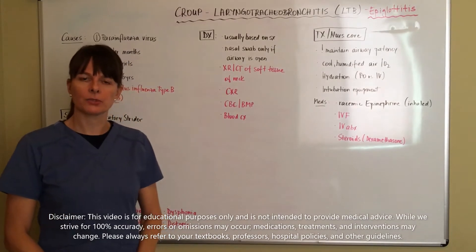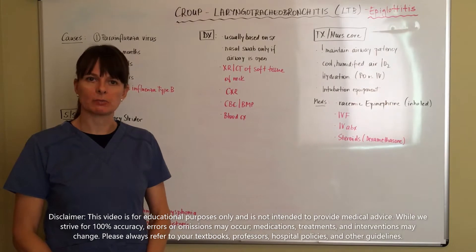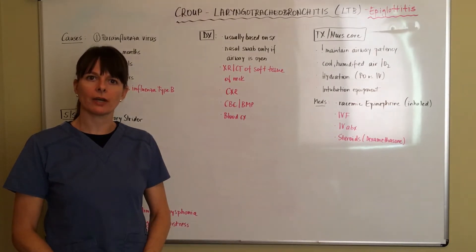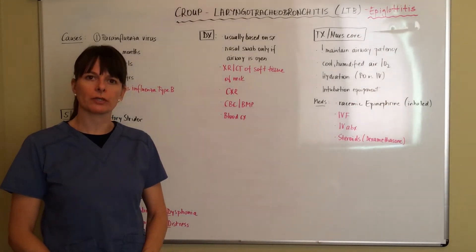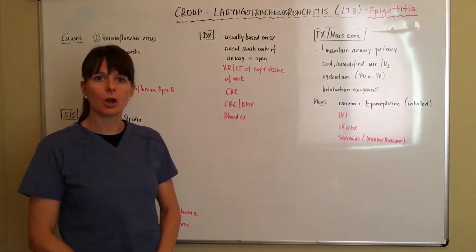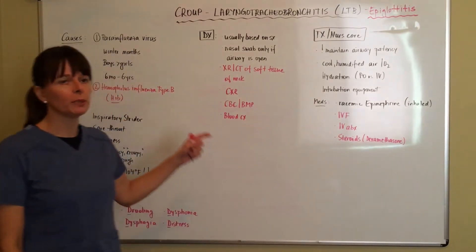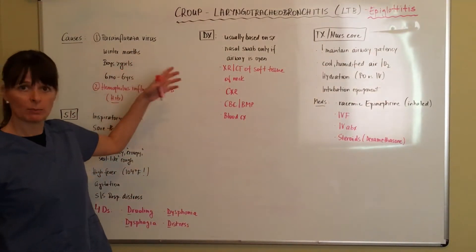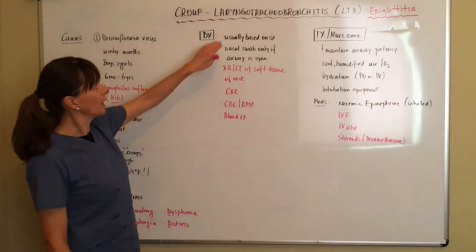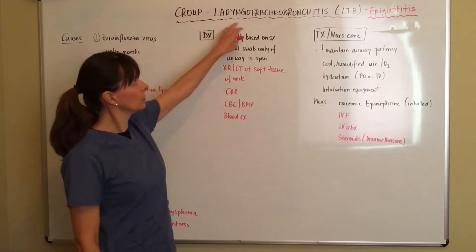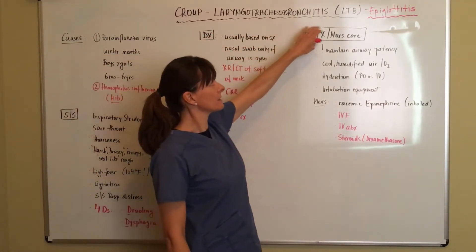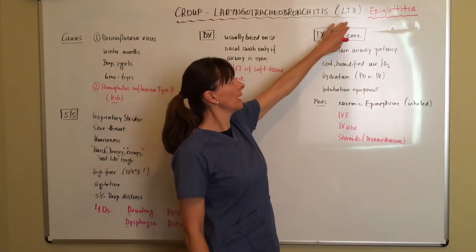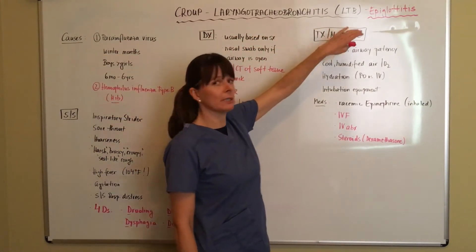Hi and welcome to Nursing School Explained. Today we'll cover another respiratory disorder that affects children which is called croup, or laryngotracheal bronchitis, also known as LTB.